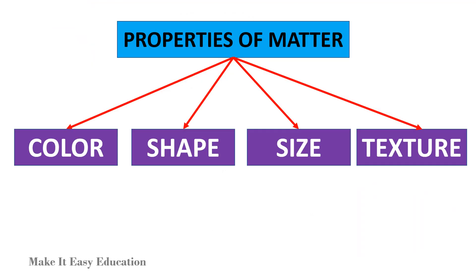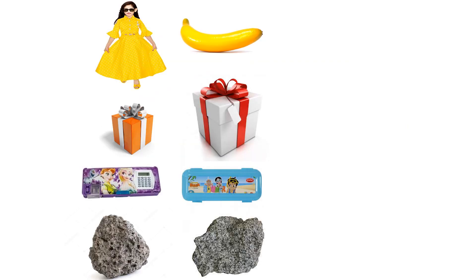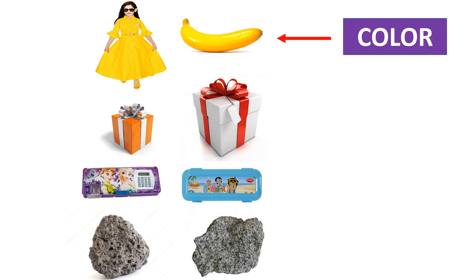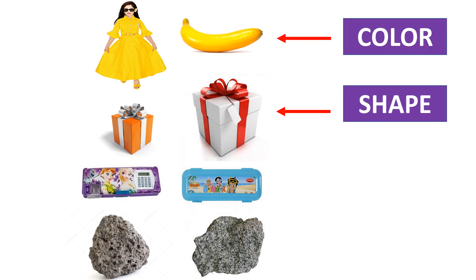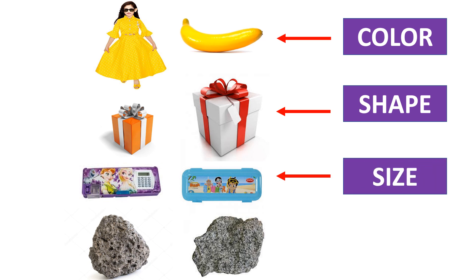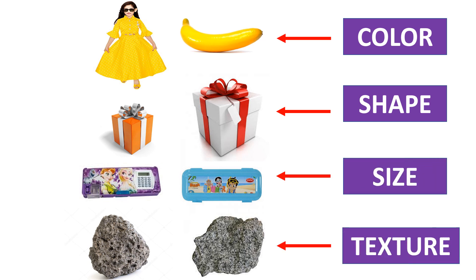The properties of matter are color, shape, size, and texture. Look at the objects in each row. The objects in each row have the same property: same color, same shape, same size, same texture.